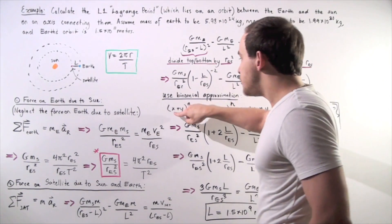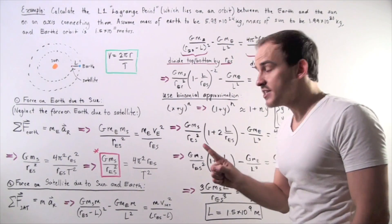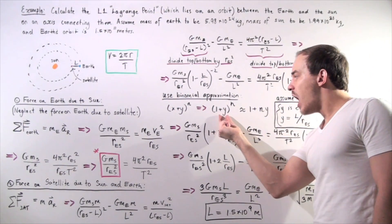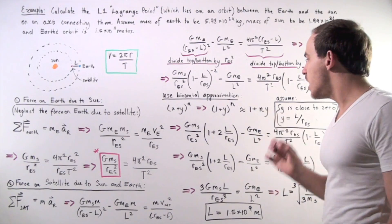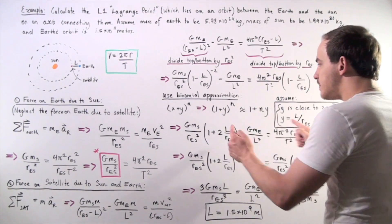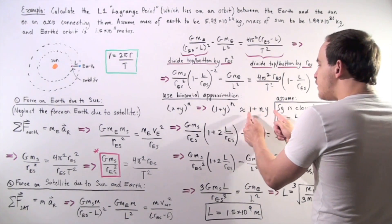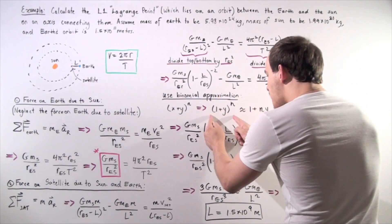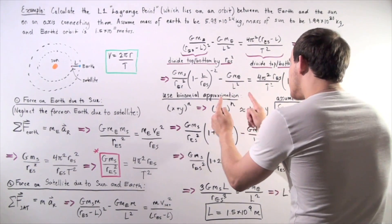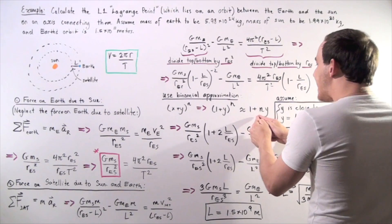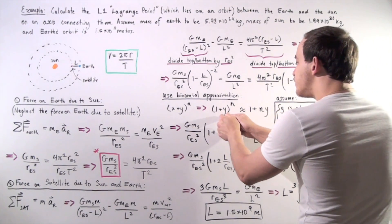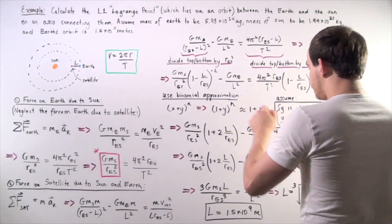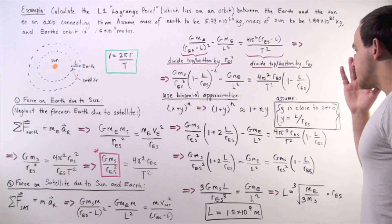In fact, if we choose x to be 1 and y to be a very small number, we can approximate this expression. It becomes approximately equal to 1 plus n times y, where y is the very small number and n is the power.